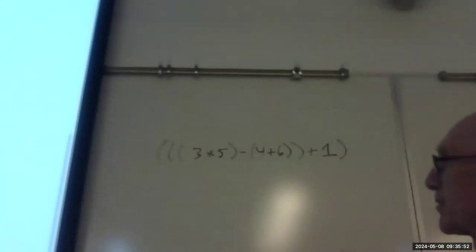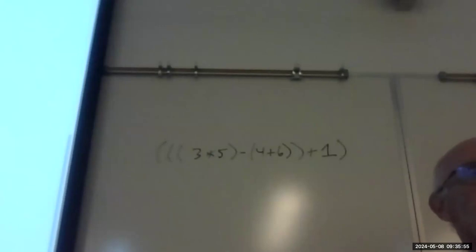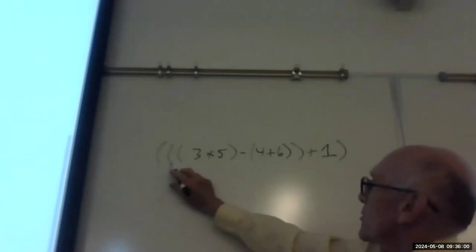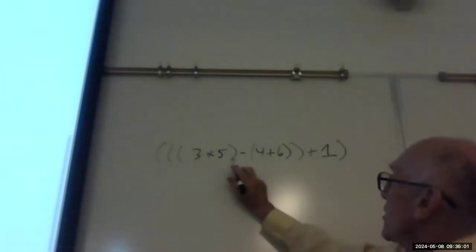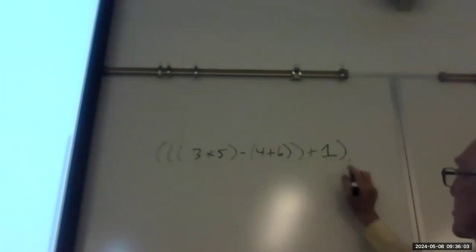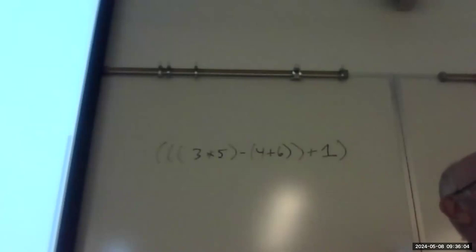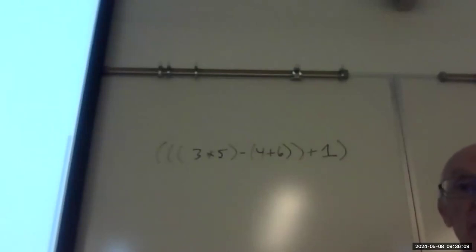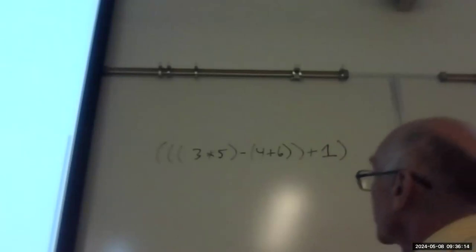Here's how I checked that the parentheses are balanced: every time I see an opening parenthesis I add one, and every time I see a closing one I subtract one. So I've got one, two, three, two, three, two, one, zero. If I end up at zero, my parentheses are balanced — they may not be exactly where I want them but they're definitely balanced.